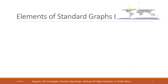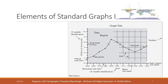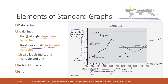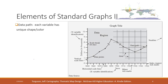Let's talk about the basic elements of a graph. A graph has several basic elements. We have the data region, where we are going to put our graph. We have the scale lines — horizontal lines and also vertical lines. One thing to keep in mind is that we normally use the vertical axis to represent the dependent variable and the horizontal axis to represent the independent variable. We also have tick markers and the grid.